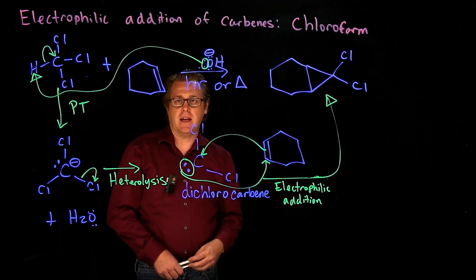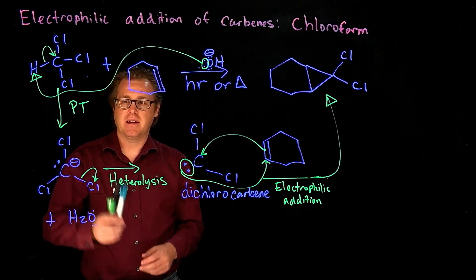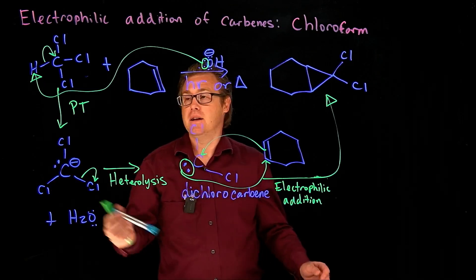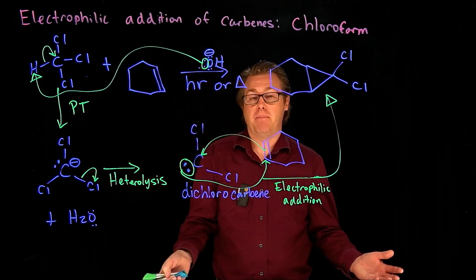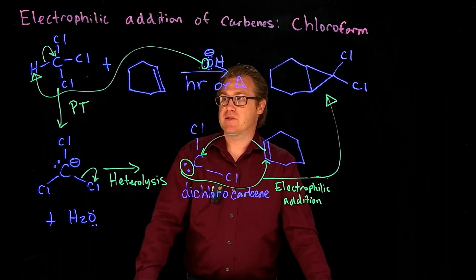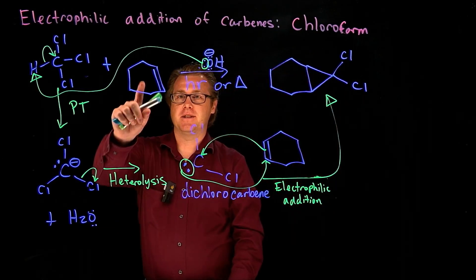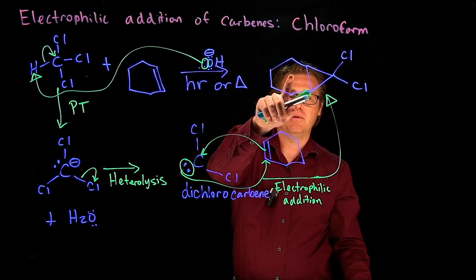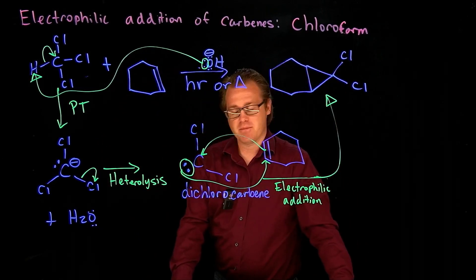So I like looking at mechanisms because look at these steps: proton transfer, heterolysis, electrophilic addition. They're pretty basic elementary steps, but the overall transformation is this cyclohexene right here all the way to the three-membered ring. Isn't that pretty slick?